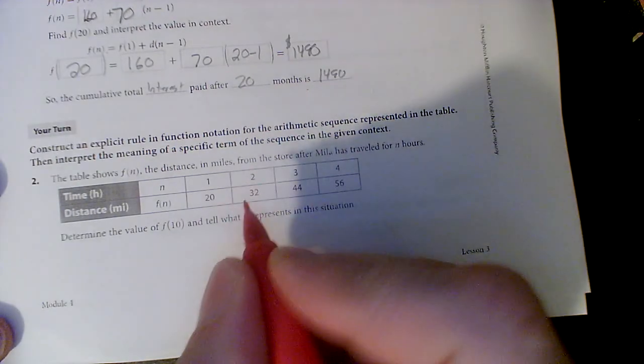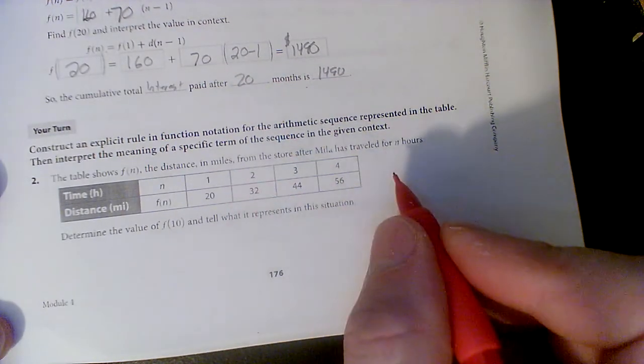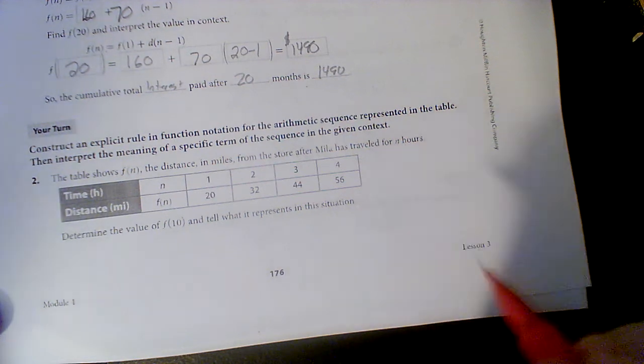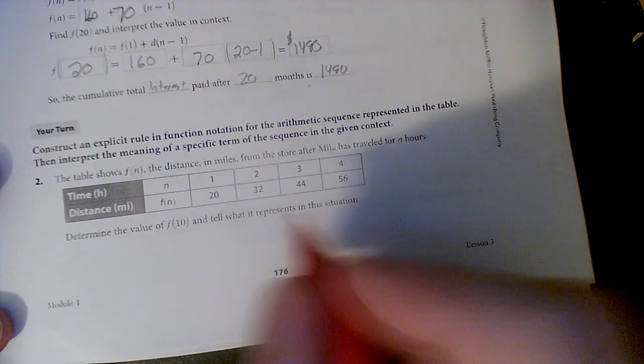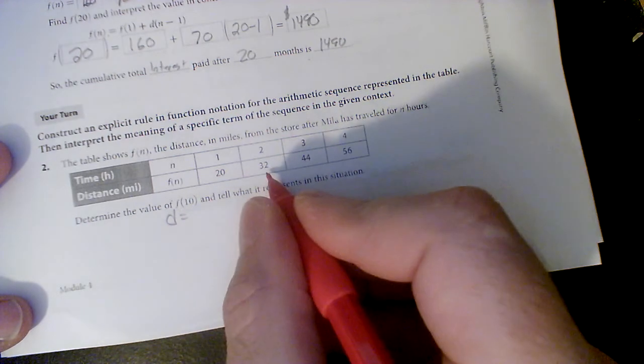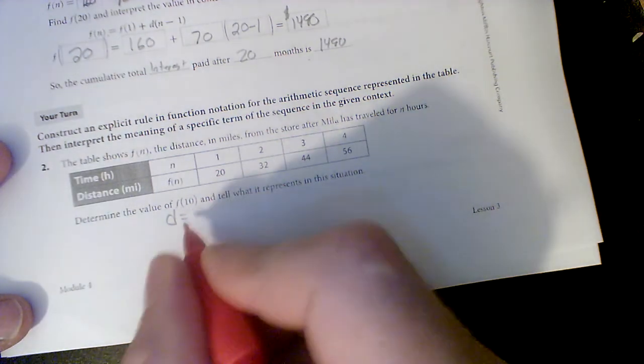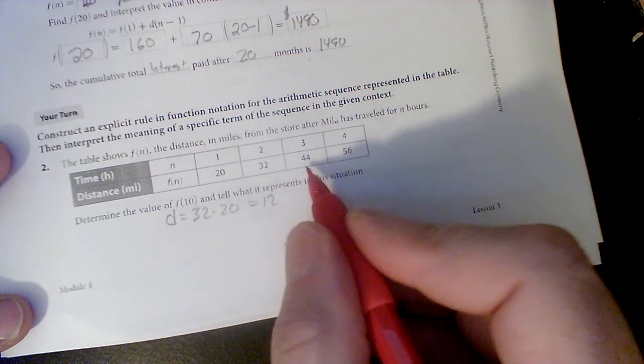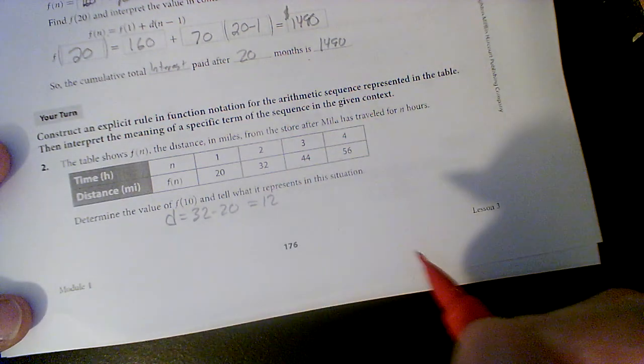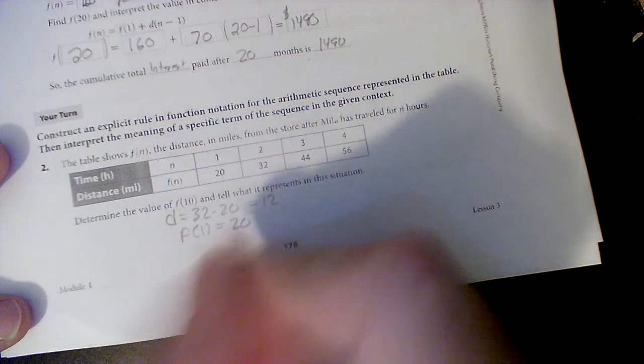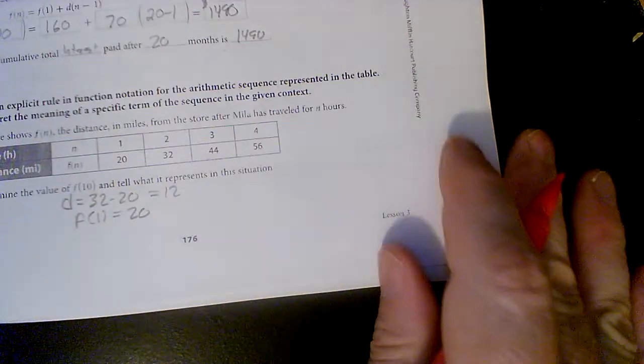Alright? Table shows the distance in miles after Mila has traveled for n hours. So it looks like, let's get our difference. Our difference is going to be any number subtracted. So 32 minus 20 equals 12. And just a quick rundown, that looks like 12 and so does that. So they're all 12. And our F of 1 is our starting of 20.